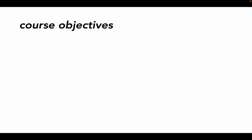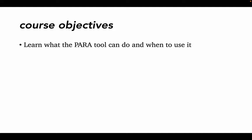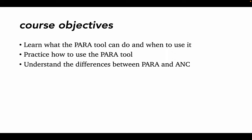In this module, we will go over when to use PARA and what it's most helpful for, and we'll practice a bit how to use the tool itself. Like the Active Neighborhood Checklist, PARA is an audit tool, meaning that it's meant to assess the qualities of a space that might be used for physical activity or other health behaviors, but not about assessing those behaviors themselves.